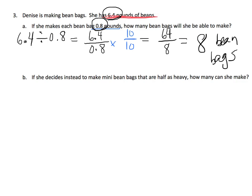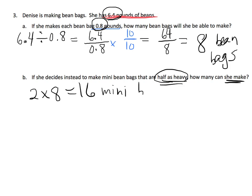Now, if she decides to make mini bean bags that are half as heavy, how many could she make? Well, if the bean bags are half as heavy, that means she's going to make twice as many bags. So that's going to be 2 times 8 is 16 bean bags. And that's using logic.